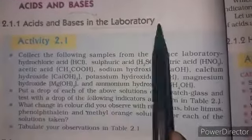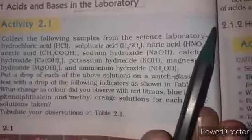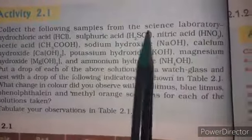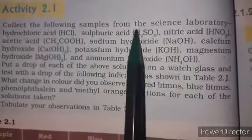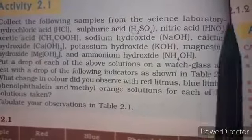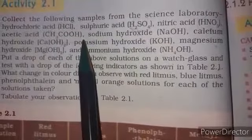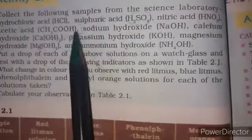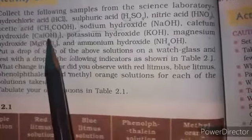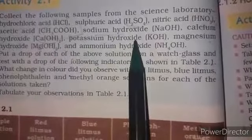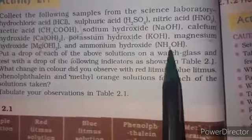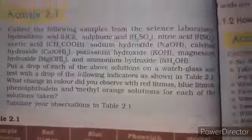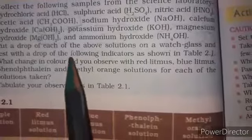Next we look at the chemical properties of acids and bases. In the lab we can collect the following samples: hydrochloric acid (HCl), sulfuric acid (H₂SO₄), nitric acid (HNO₃), acetic acid (CH₃COOH); and bases: sodium hydroxide (NaOH), calcium hydroxide (Ca(OH)₂), potassium hydroxide (KOH), magnesium hydroxide (Mg(OH)₂), and ammonium hydroxide (NH₄OH). We collect these in test tubes.